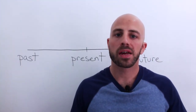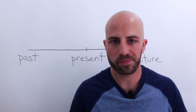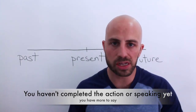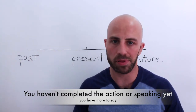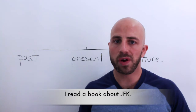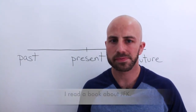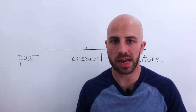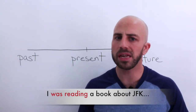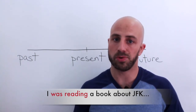If you're not finished, pause the video and finish your examples. Now let's move on to rule number three. Rule number three is the general idea of the past continuous: it's an action that happened in the past but hasn't been completed, or you're not finished talking about it. Compare: 'I read a book about JFK' — that's past simple — versus 'I was reading a book about JFK.'